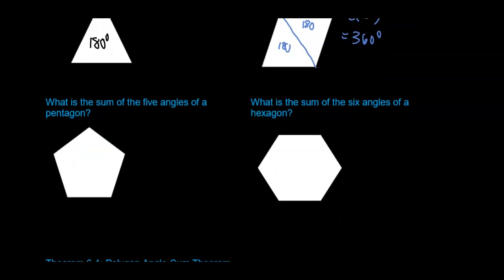If we look at a pentagon, how many triangles can be drawn? We have one, we can connect the diagonal here, so there's one triangle, and we can connect this, and we have three triangles. So that means we would have 3 times 180, which is 540 degrees.